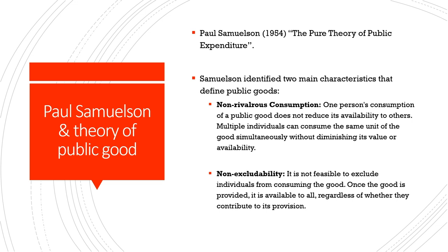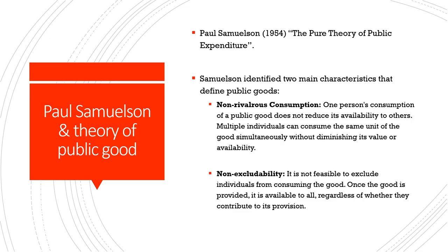Non-rivalrous consumption means that if one person is consuming a public good, it does not reduce its availability to others. If I am utilizing a public park, my use does not reduce the benefits that another individual or group can also take from the same public park. In that sense, multiple individuals can consume the same unit of the good simultaneously without diminishing its value or availability.